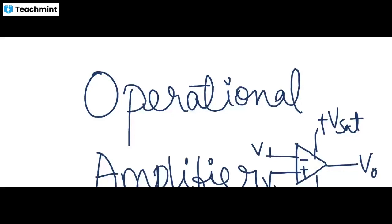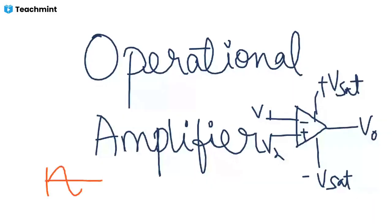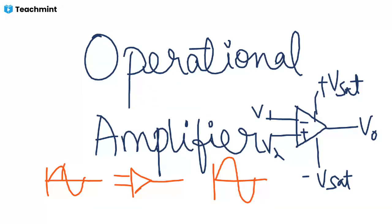Hello. In this video, we will discuss the operational amplifier. We use the operational amplifier to amplify the signal. We use the input signal and the output signal to amplify the signal. This device will increase the amplitude.